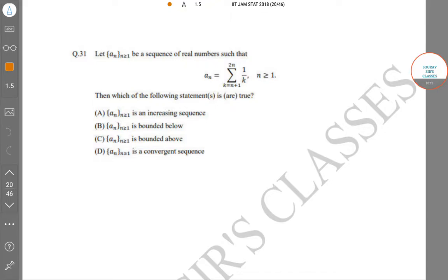Hello students, welcome to sort of such classes. Today we have a problem: if a_n is a sequence of real numbers such that a_n equals the sum of 1/k from k = n+1 to 2n, then which of the following statements are true? The statements are: (A) a_n is an increasing sequence, (B) a_n is bounded below, (C) a_n is bounded above, and (D) a_n is a convergent sequence.